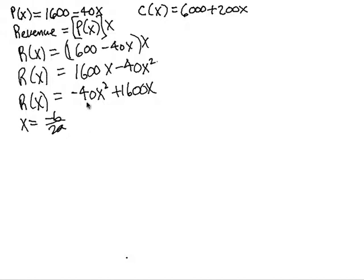So here we have a is minus 40 and b is 1600. So we have minus 1600 over 2 times minus 40. So we have minus 1600 over minus 80. Negatives will cross out. We'll be able to cross out a 10 automatically. And we'll find then that 160 divided by 8 is going to be 20.